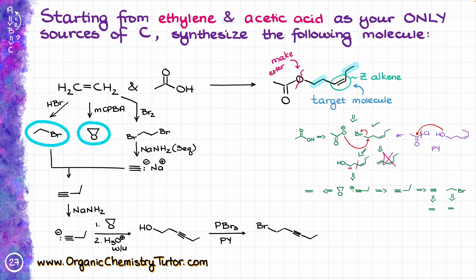Next, I am going to replace my OH with bromine using PBr3 and pyridine, convert my triple bond into the Z double bond using hydrogen on Lindlar's palladium, and finally perform the SN2 reaction to convert my bromide into the ester by reacting it with the acetate anion, which I make by deprotonating my carboxylic acid with sodium hydroxide — which gives us our target molecule.